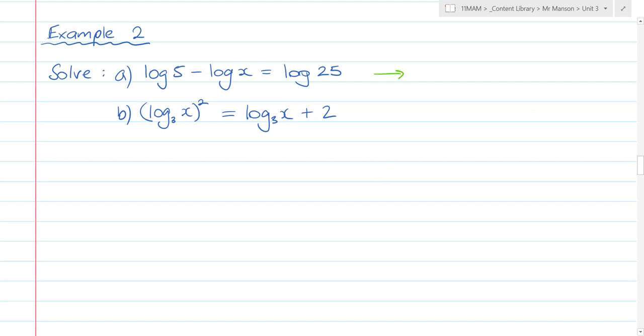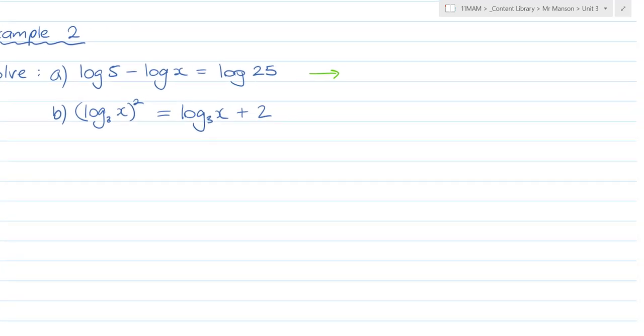Log base 5 of 5 minus log base 5 of x equals log 25. How am I going to do that? Log base 5 of 5 over x equals log 25. Once you get to a point where you've got log of something equals log of something, it has to be true that those two things must be equal. So you can just drop the log. 5 equals 25x. x equals 5 over 25, which equals one-fifth.